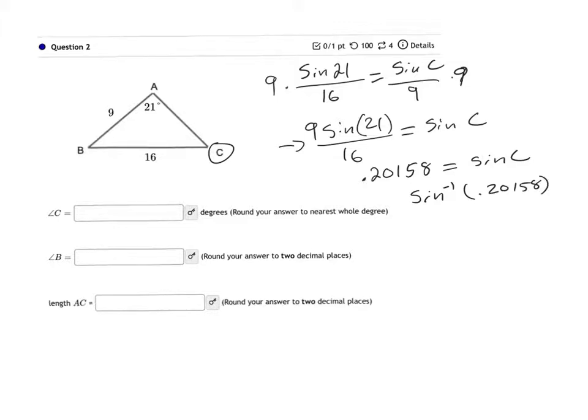For my example, and yours will probably have different numbers, and when I do that, I'm going to end up with the angle C is equal to 12 when I round it to the nearest whole degree.